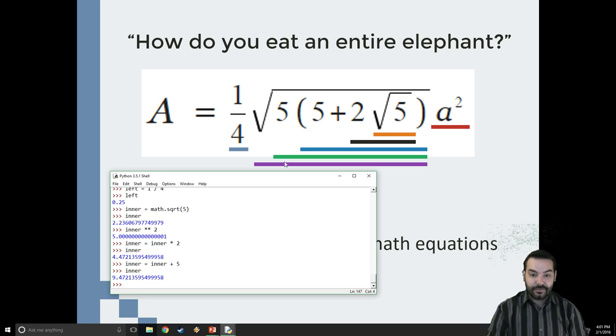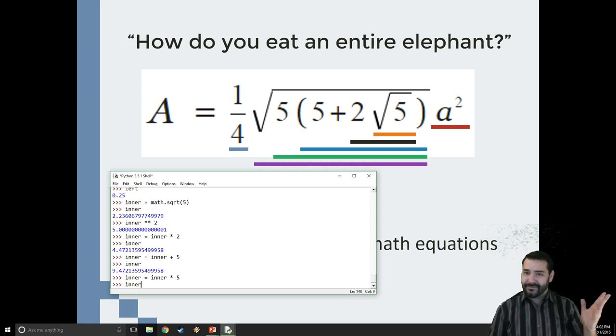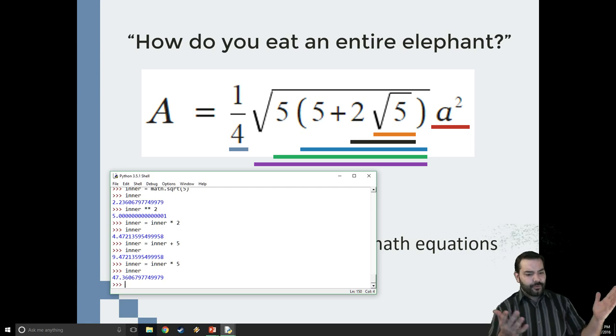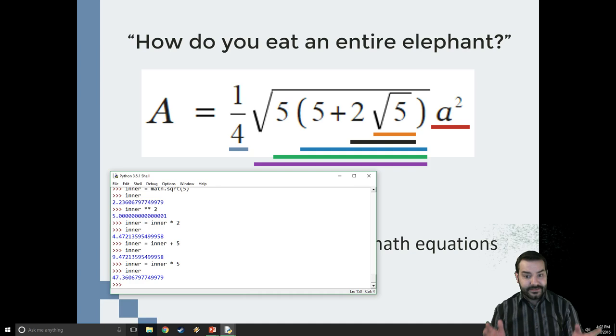Because you see, the next one is multiplied by 5. All right. Instead of adding by 5, I multiply by 5. And inner should be like 9.4 times 5. 9 times 5, roughly about 45. 47, I'm in the same ballpark. I don't need to know 100% what the answer is. I just need to know that I'm roughly close enough to it.